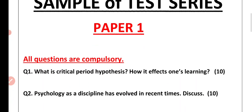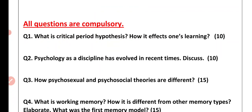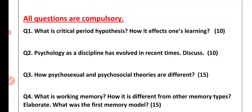In Paper 1, all questions are compulsory. The first question is: what is the Critical Period Hypothesis and how does it affect one's learning? — a 10-marker. Then: psychology as a discipline has evolved in recent times; discuss how psychosexual and psychosocial theories are different — a 15-marker. What is working memory, how is it different from other memory types, and what was the first memory model? — also a 15-marker.